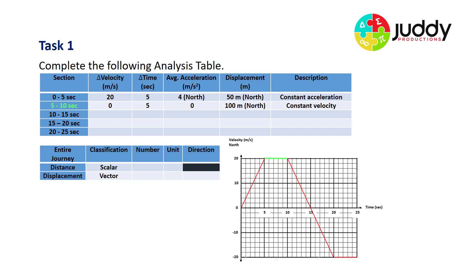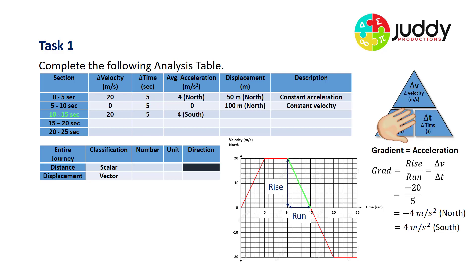From 10 to 15 seconds we have a change of velocity of 20 meters per second — it started at 20 and drops down to zero, taking five seconds. That's a fall over a run: dropping 20 meters per second over five seconds. On average, the gradient is negative four meters per second squared in the north direction, which can also be expressed as four meters per second squared in the southerly direction.